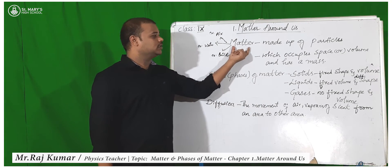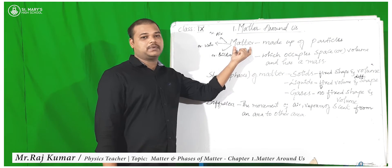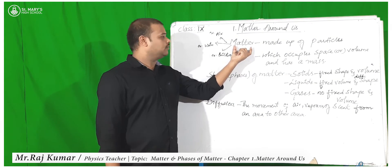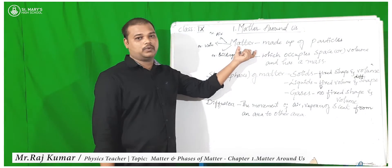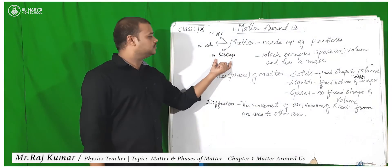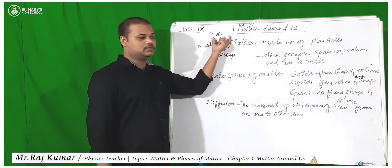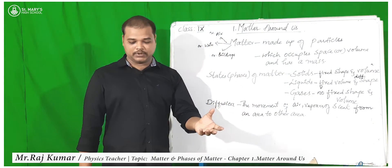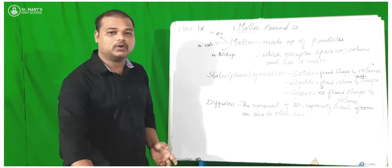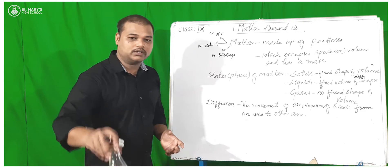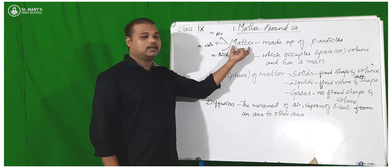Matter — a simple word which explains a lot. Matter refers to the things around us. For example, the building, the water we drink, the air we breathe, the chair, table, a duster, a book, a conical flask — everything is called matter.